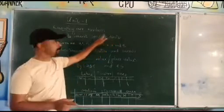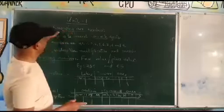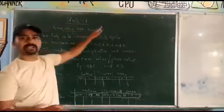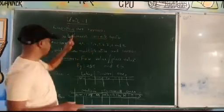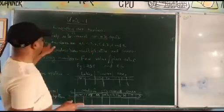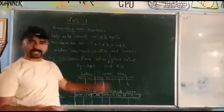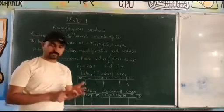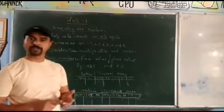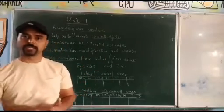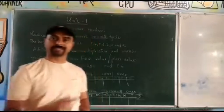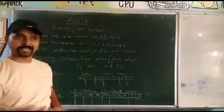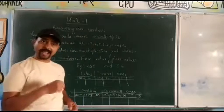That is knowing of numbers — what numbers are. The basic numbers are 0, 1, 2, 3, 4, 5, 6, 7, 8, and 9.